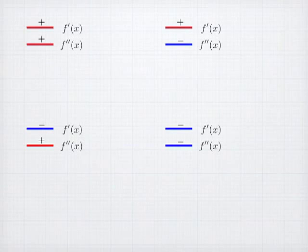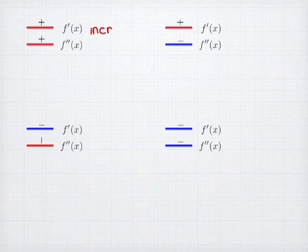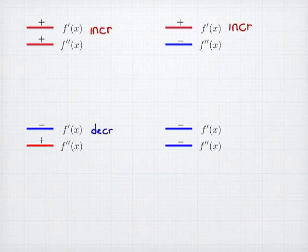On the screen I have shown four different possible combinations of how the first and second derivative signs might show up. The first derivative could be positive or negative. The first derivative tells me whether or not a function is increasing or decreasing. So where the first derivative is positive, it tells me that f of x is increasing, and where the first derivative is negative, the original function is decreasing.